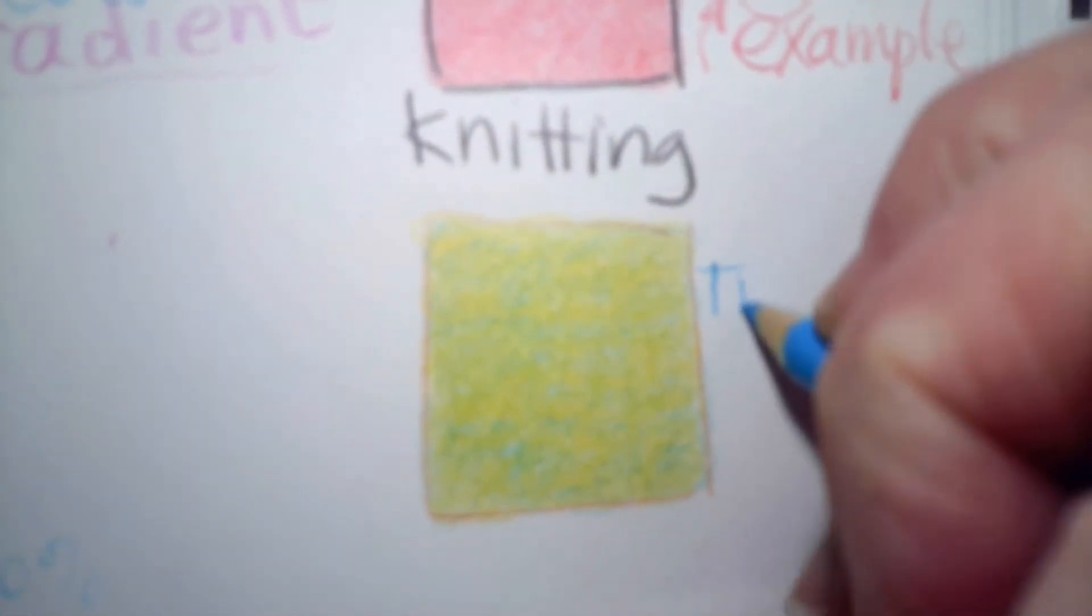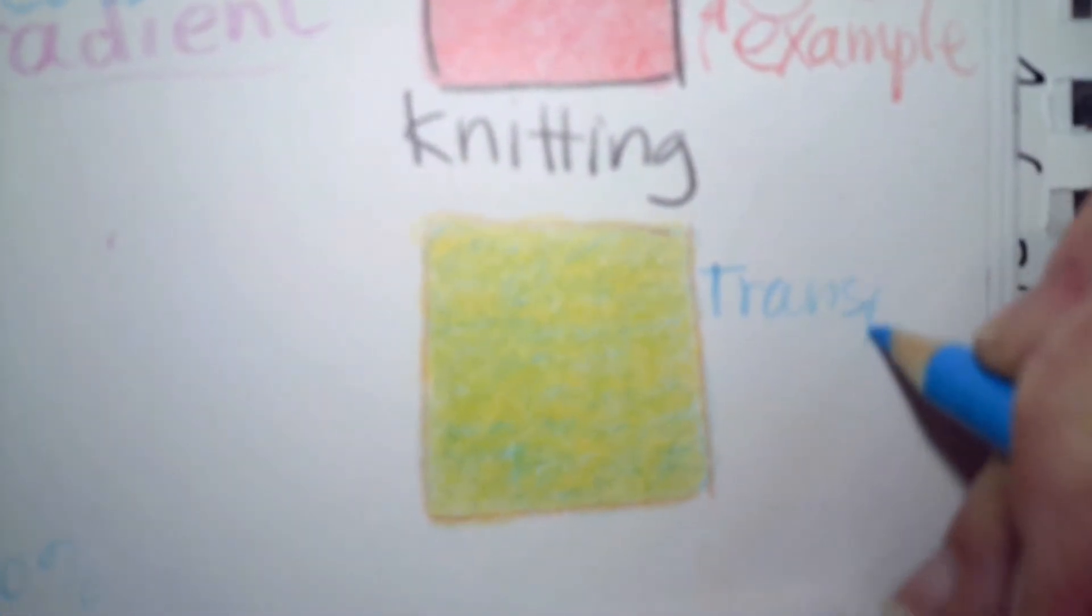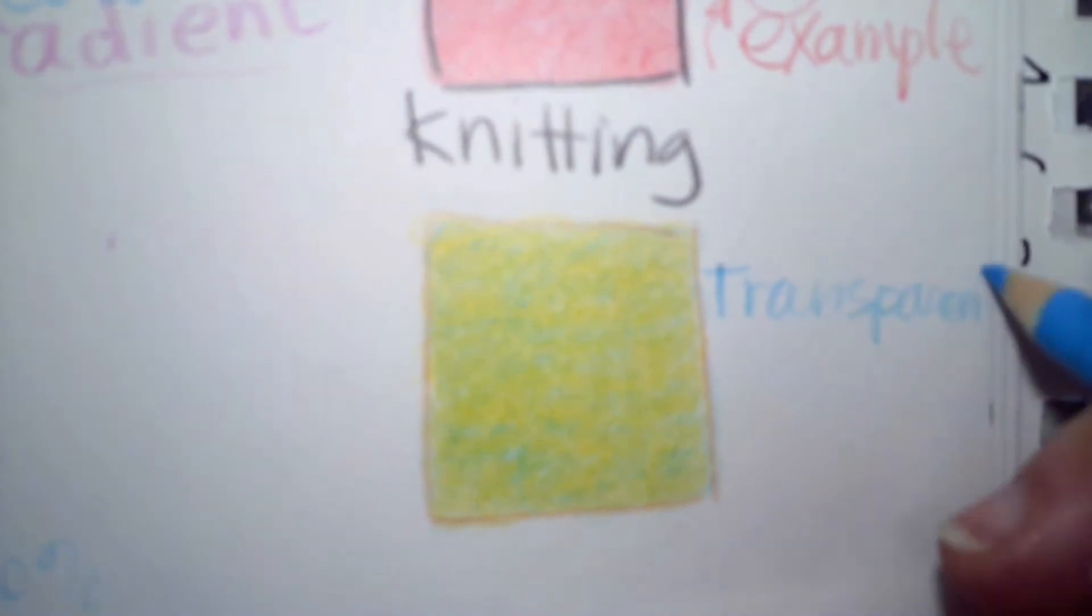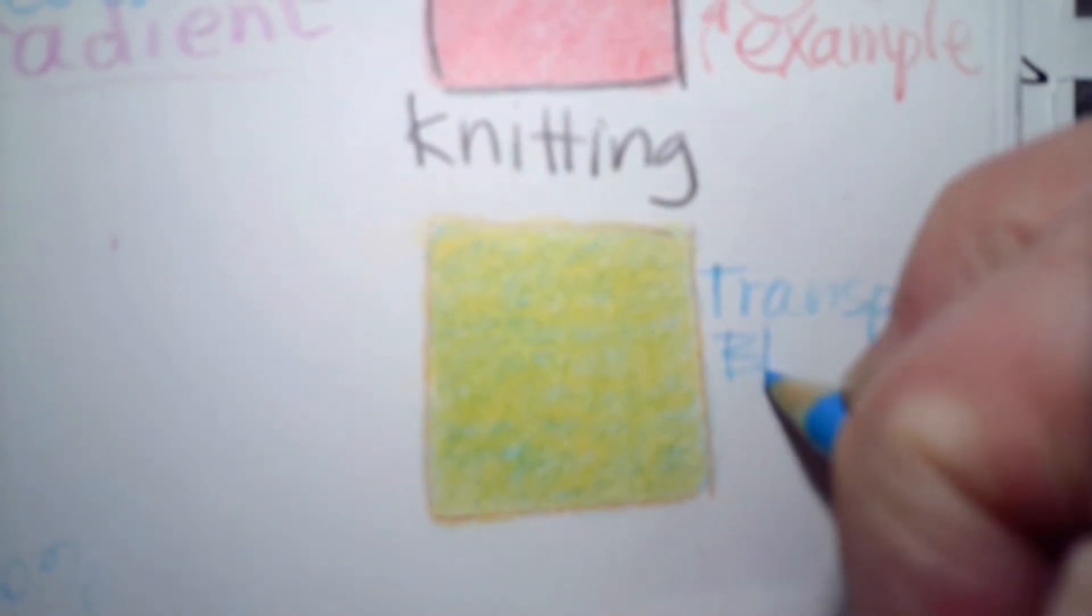So now I'm going to call this transparent blue plus yellow. Transparent blue plus yellow equals green. I mean, visually, we see green, but it's actually two colors sitting together in the same place. So now I'm going to zoom out.